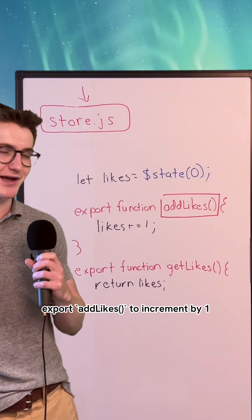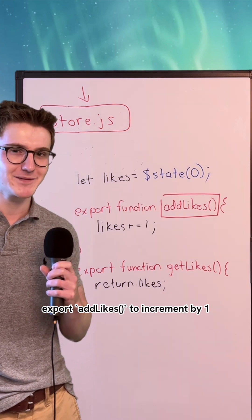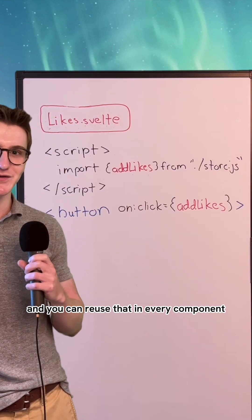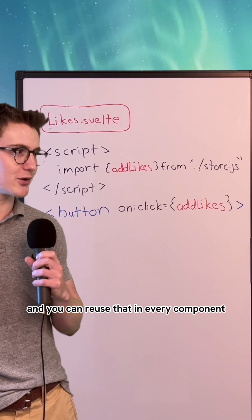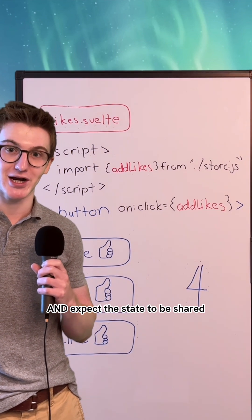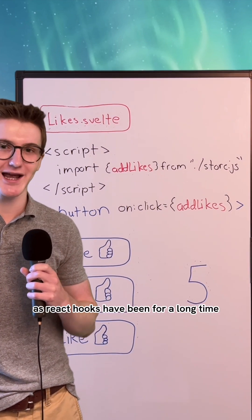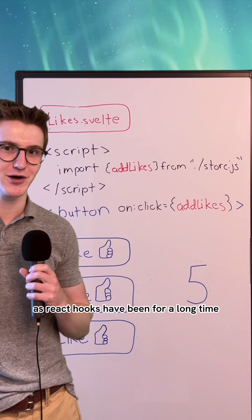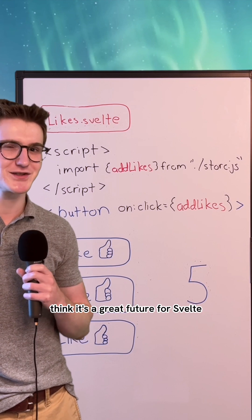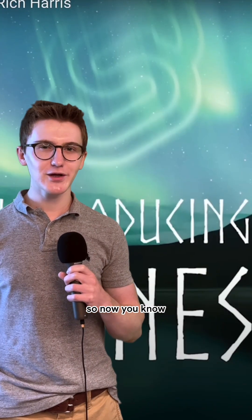Export add likes to increment by one, and you can reuse that in every component and expect the state to be shared. It's as composable as React hooks have been for a long time. I think it's a great future for Svelte. So now you know.